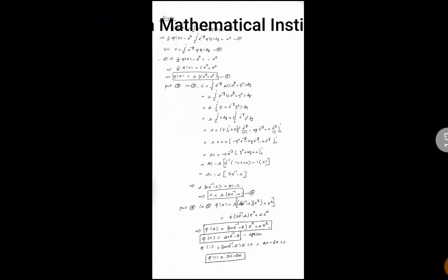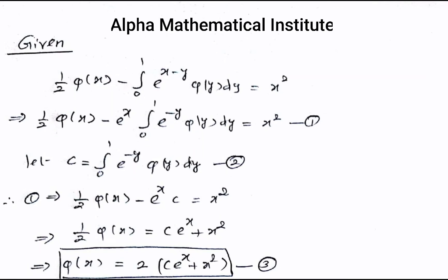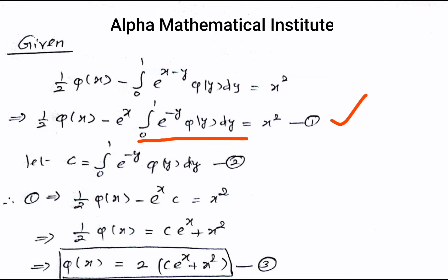Given the equation (1/2)φ(x) minus the integral from 0 to 1 of e^(x−y) · φ(y) dy equals x². Since e^x is independent of y, we can take e^x outside the integral. This can be rewritten as (1/2)φ(x) minus e^x times the integral from 0 to 1 of e^(−y) · φ(y) dy equals x². Since the limits are constant, integrating and substituting limits will yield one constant.